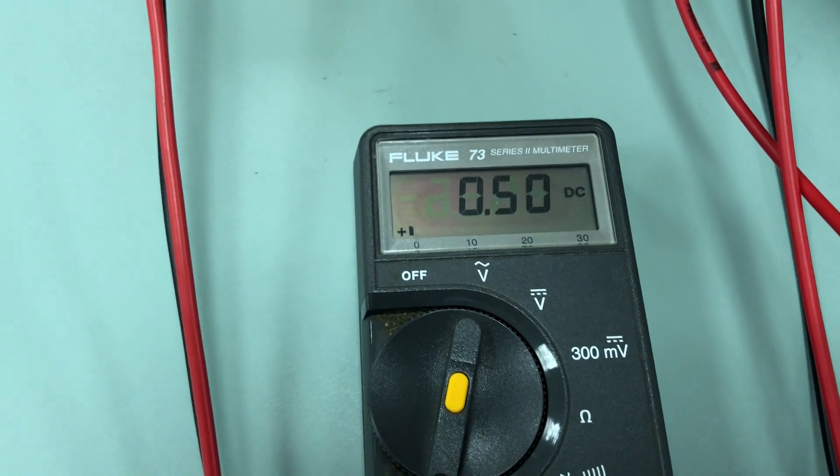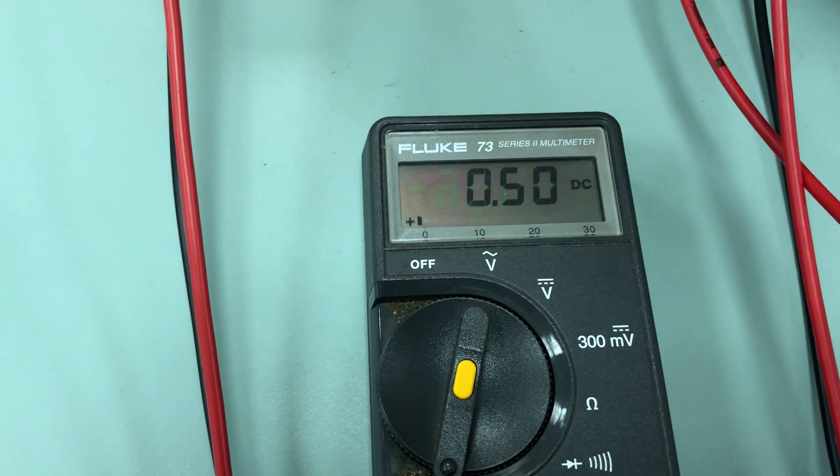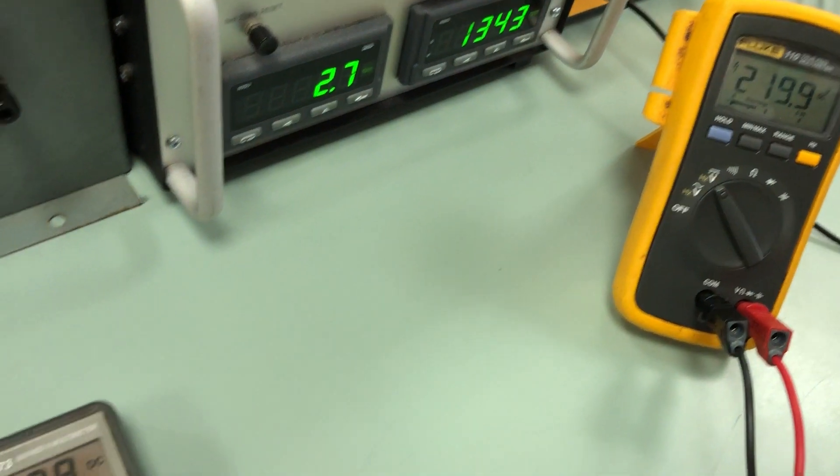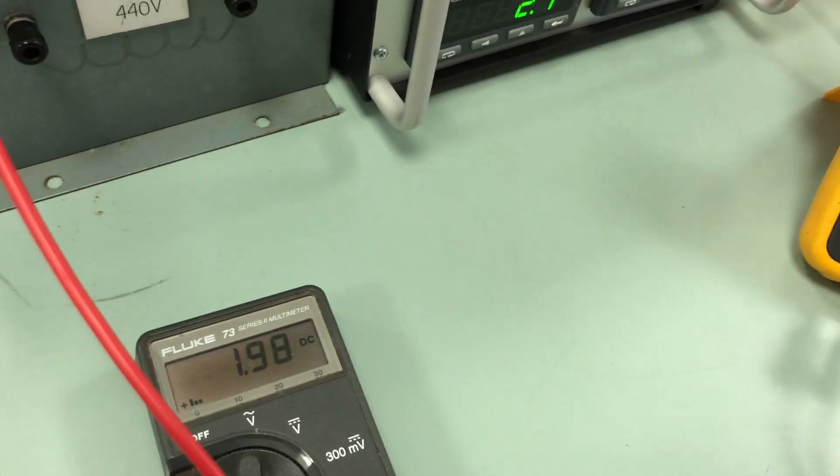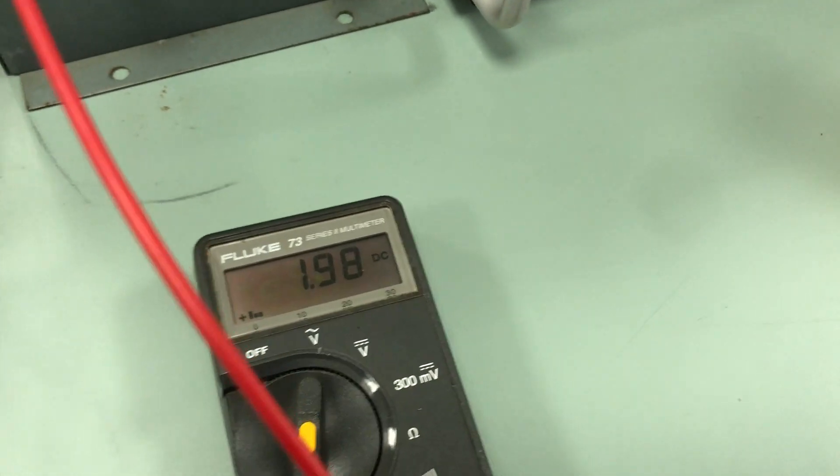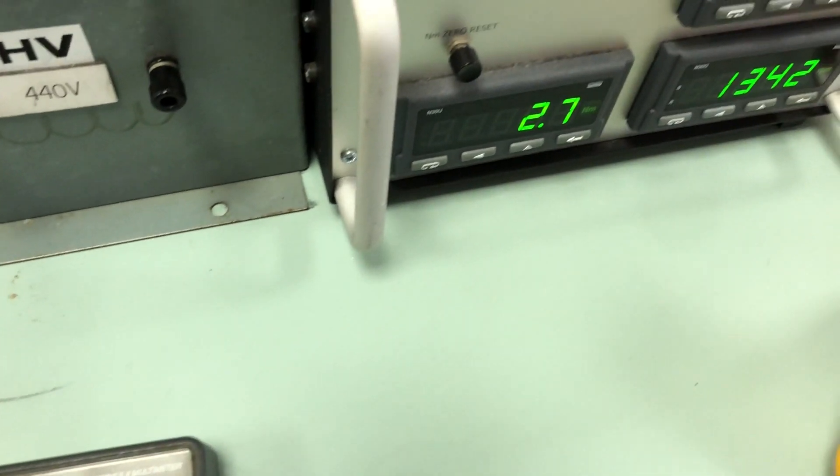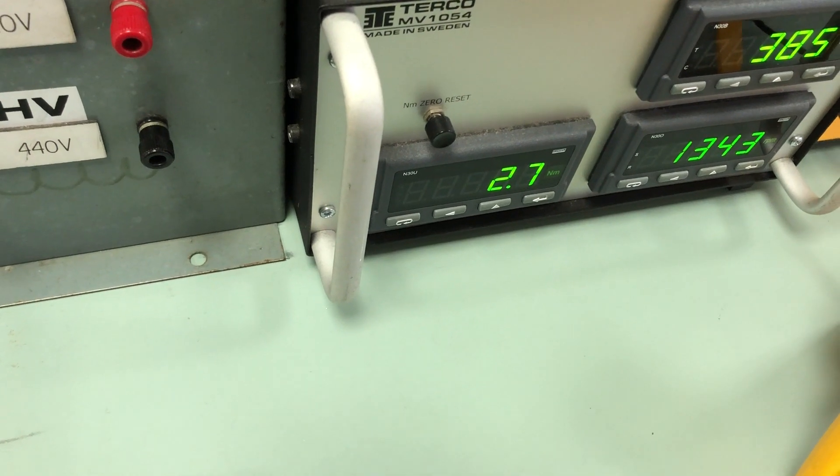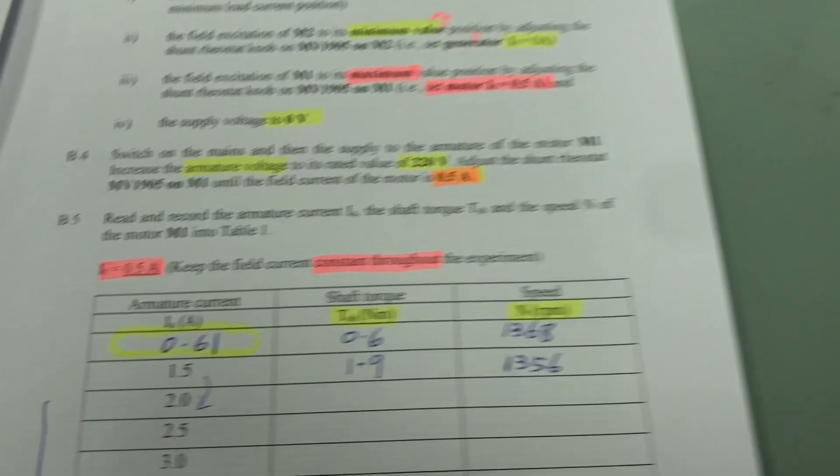So this is supposed to be kept constant at 0.5 and then 2 amp here and 220 supply voltage. So quite a bit of adjustment. So about that 2 ampere and 2 ampere and 1343 and 2.7.